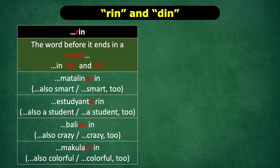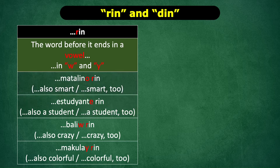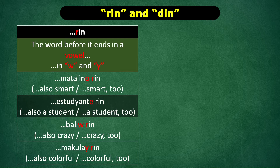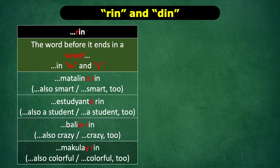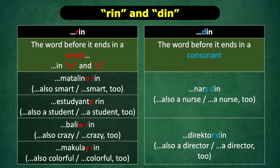You use Rin if the word before it ends in a vowel, like "Matalino Rin." In addition, you use Rin if the word before it ends in the consonants W and Y. Why is that? Well, because W and Y, when placed at the end of a word, sound like a vowel. For example, "Balirin" — also crazy, or crazy too. "Makulay Rin" — also colorful, or colorful too.